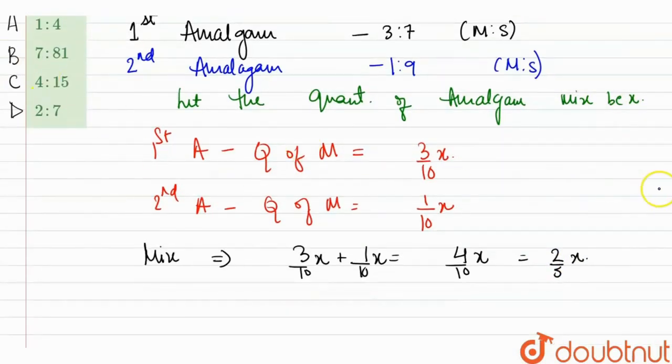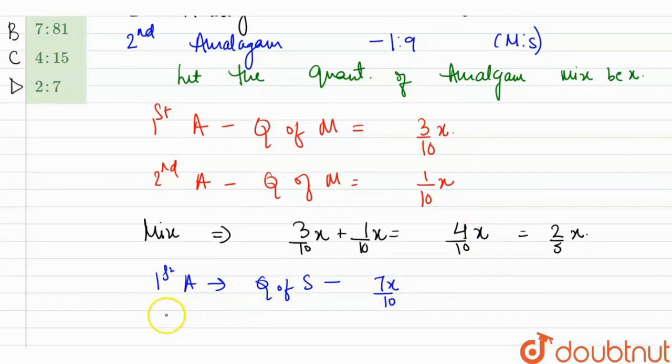Now similarly, we'll determine for silver. In first amalgam, quantity of silver will be 7x/10. And similarly, in the second amalgam, quantity of silver will be 9/10x.